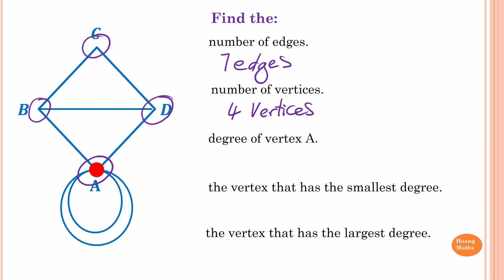To find the degree of vertex A: we have one, two, then this loop gives one edge but two degrees, so that's one more making four, and this other loop also gives two degrees — so counting: one, two, three, four, five, six — the degree of A is six.